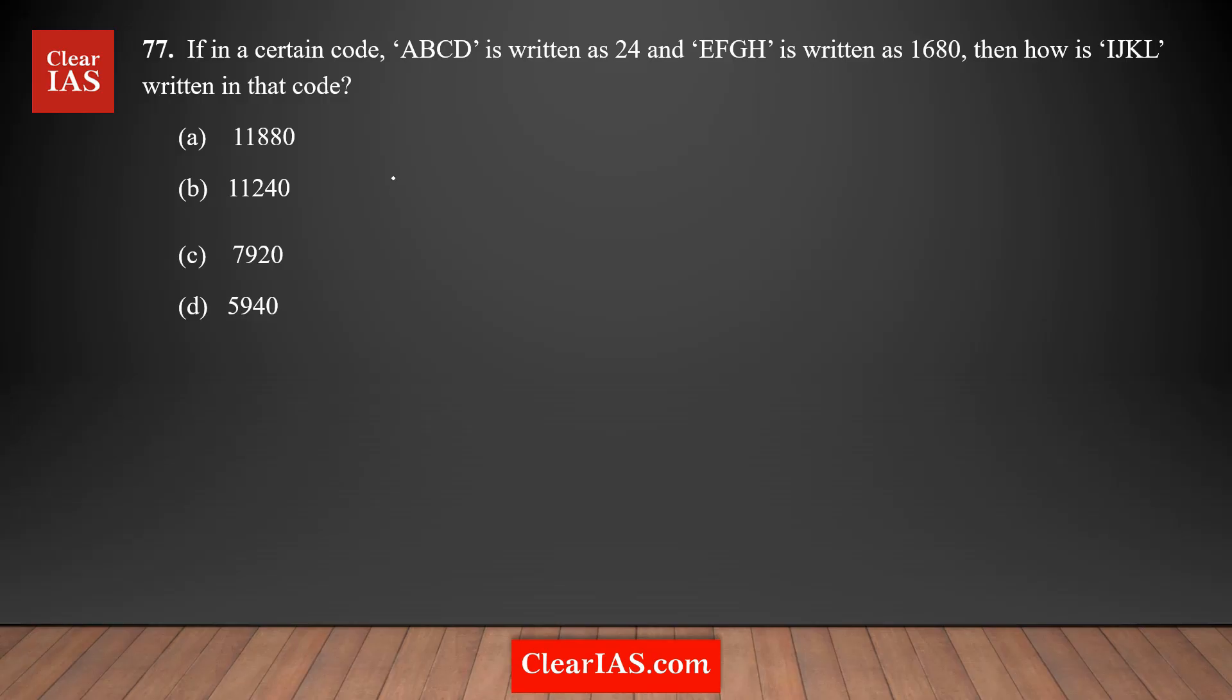This question is based on coding decoding. In a certain code, ABCD is written as 24, EFGH is written as 1680, and how is IJKL written in that code? We need to find out what pattern they've used.